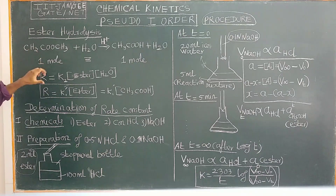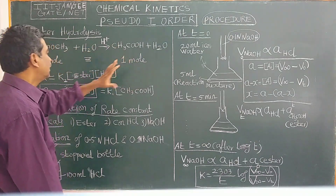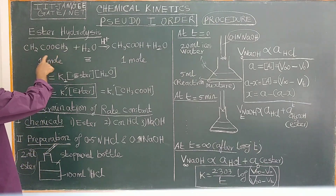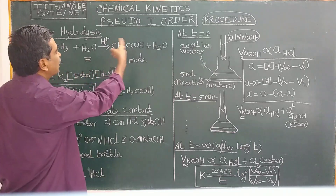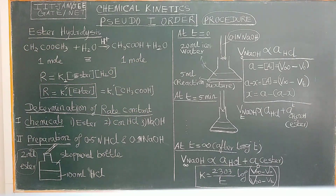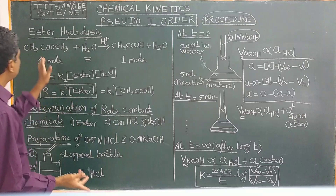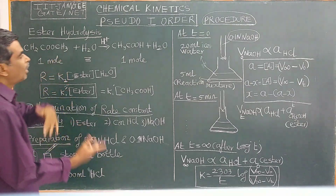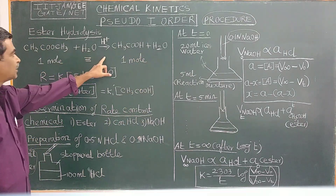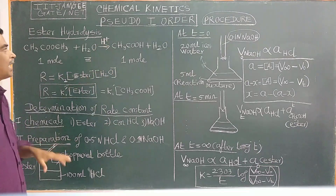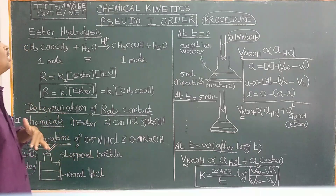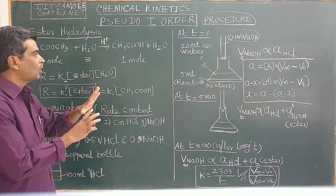In this case, one mole of ester will give one mole of acid. The rate of the reaction can be followed either by measuring the decrease in the concentration of ester, or by measuring the increase in the concentration of acetic acid. H+ acts as a catalyst, and as I mentioned earlier, catalysts are regenerated at the end of the reaction. So the concentration of H+ is always constant.